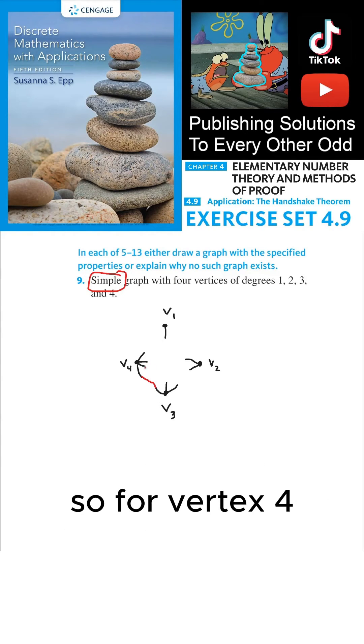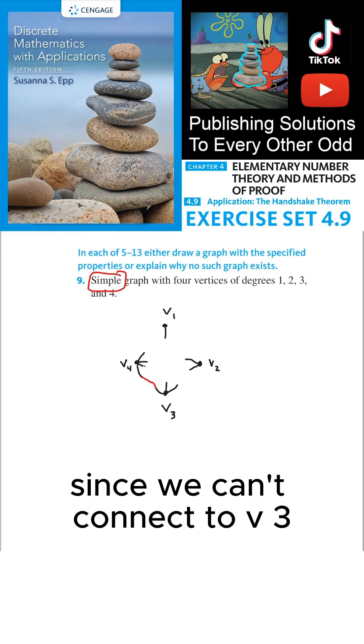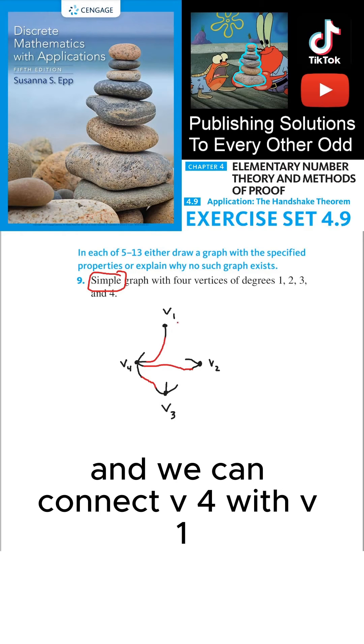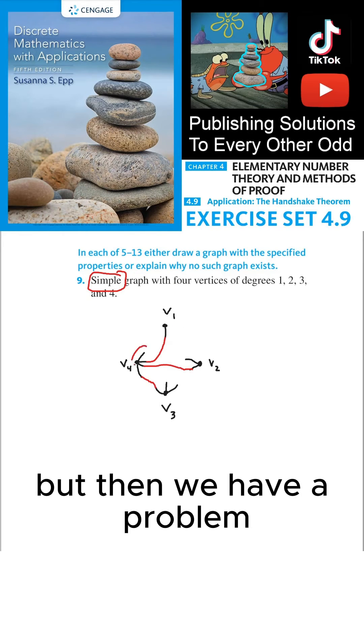So for vertex 4, since we can't connect to V3, that means we can connect this vertex to V2. And we can connect V4 with V1, but then we have a problem.